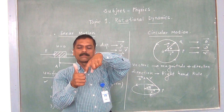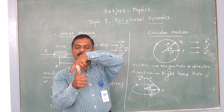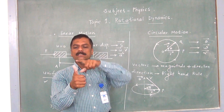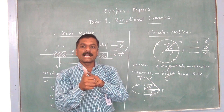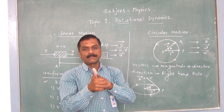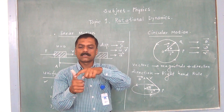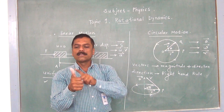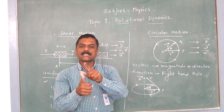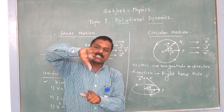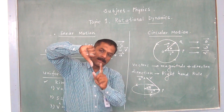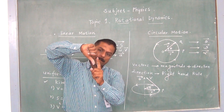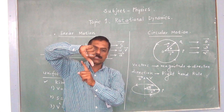This finger will indicate the particle is moving along the anticlockwise direction. Then this thumb will denote the direction of the vector. Similarly, if we change like this, now the curled finger will denote the direction of the particle along the clockwise direction.